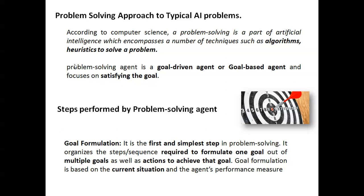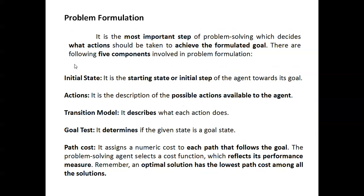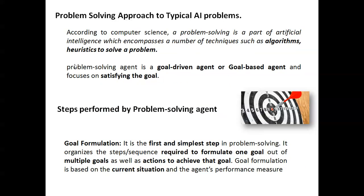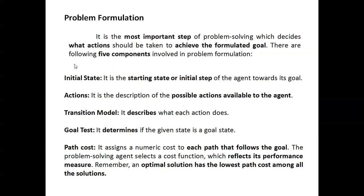There are two types. One is goal-based problem formulation, and another one is problem state formulation. So the goal state problem is goal formulation. Artificial intelligence has to formulate or optimize the problem. These are the two states: goal formulation and problem formulation.